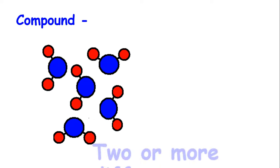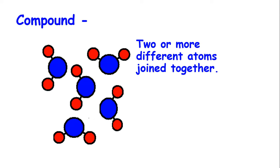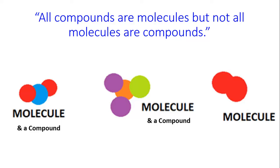Compound. Two or more different atoms joined together. To be a compound, you need to join with another atom, more than one atom, and you need to be joined with different atoms. This sentence you need to memorize. All compounds are molecules, but not all molecules are compounds.